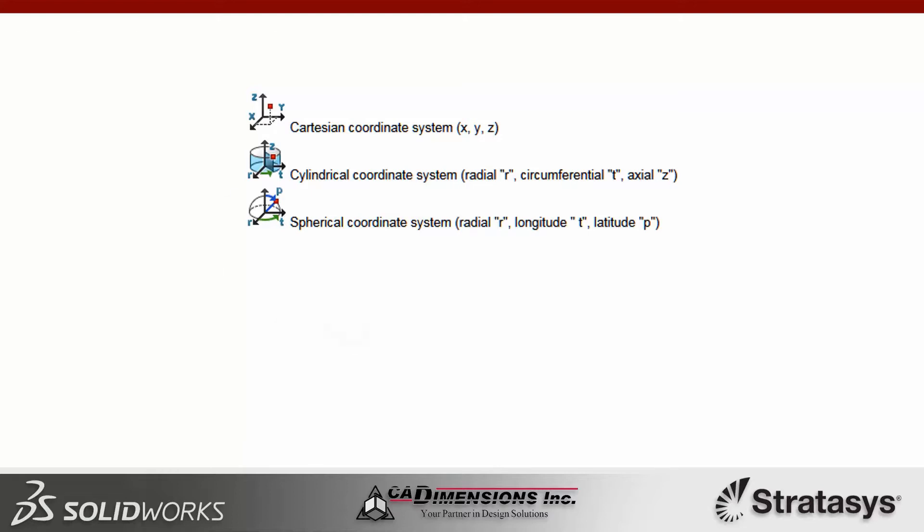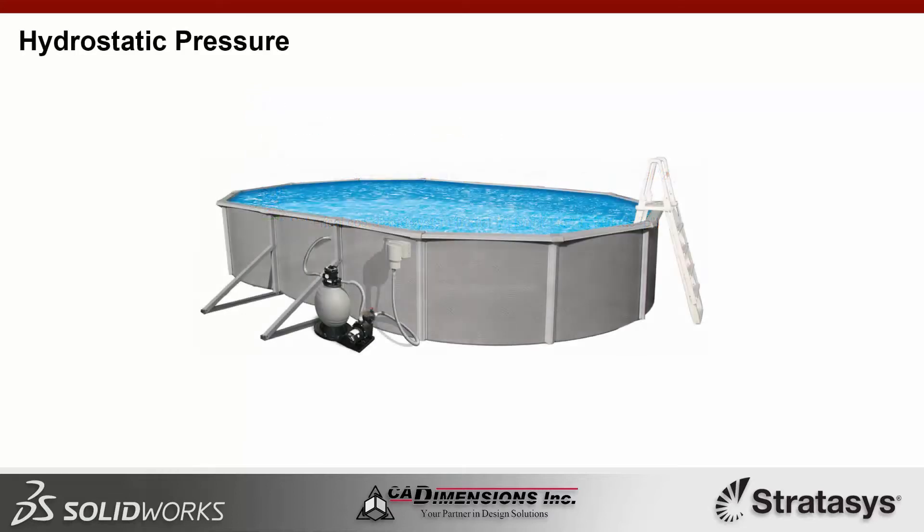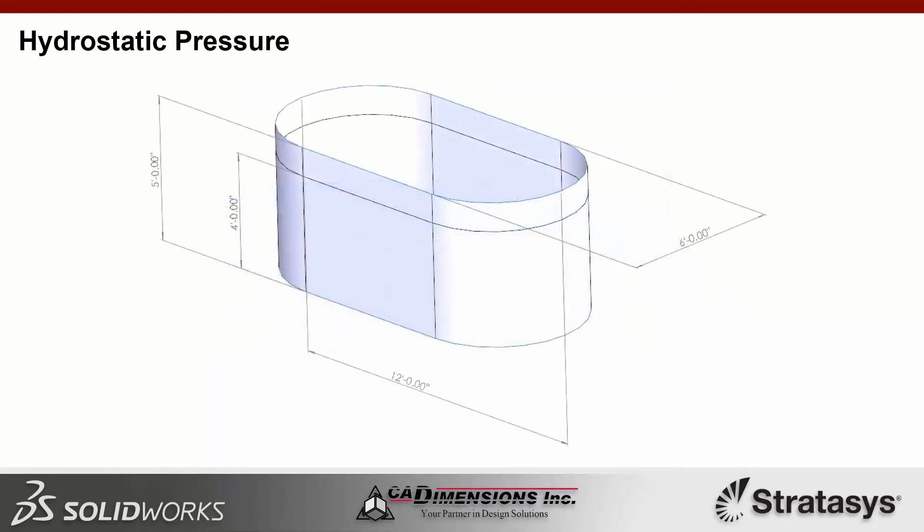Since summer is coming up, we're going to run a simple calculation of the hydrostatic pressure on a pool. My pool is an unsupported aluminum tub that is 6 by 12 feet and 5 feet tall, filled to a depth of 4 feet.